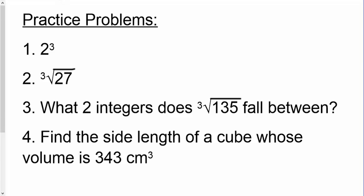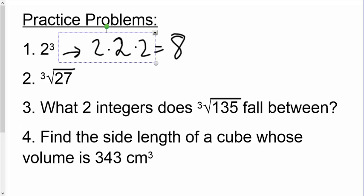So if I have 3 cubed, that's 2 times 2 times 2, which is 8. If I'm talking about the cube root of 27, what number times itself gives us 27? That's going to be 3. And those are really the only ones I want to talk about.